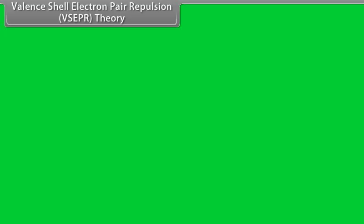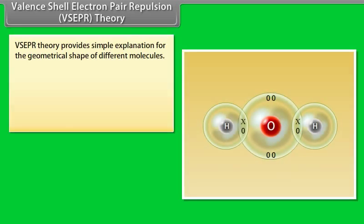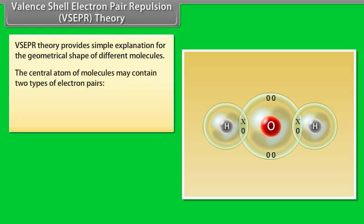Valence Shell Electron Pair Repulsion — VSEPR Theory. VSEPR Theory provides a simple explanation for the geometrical shape of different molecules. The central atom of molecules may contain two types of electron pairs: bond pair and lone pair.